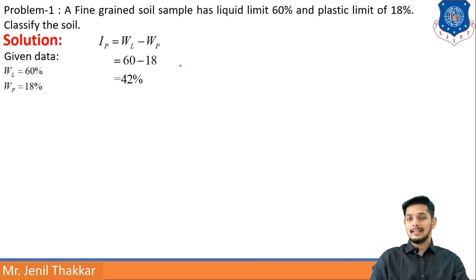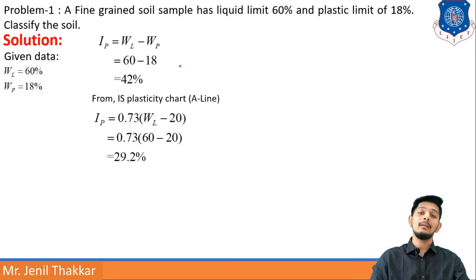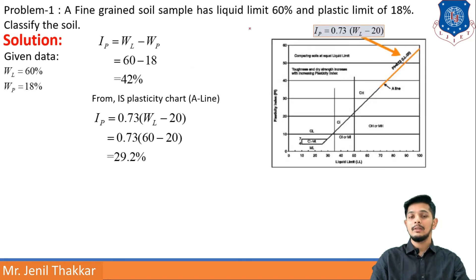For that I have to find out equation of IP A-line or plasticity chart equation which is 0.73(WL - 20). Putting WL value as 60, I am getting IP as 29.2%. Now IP A-line equation is at 29.2%. Here in this graph, if we see, this line is having value 29.2.